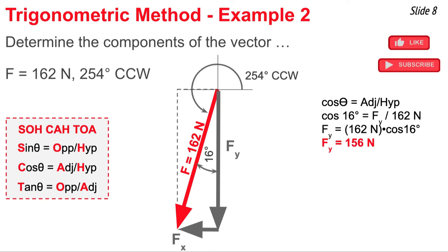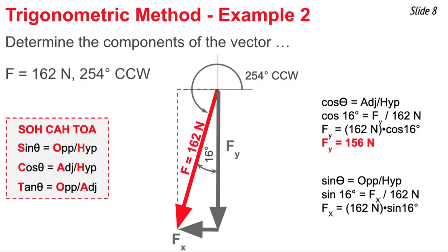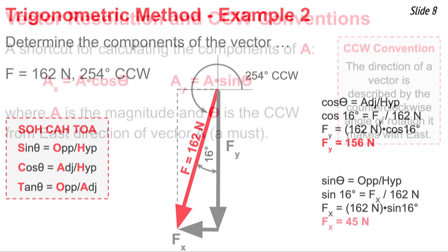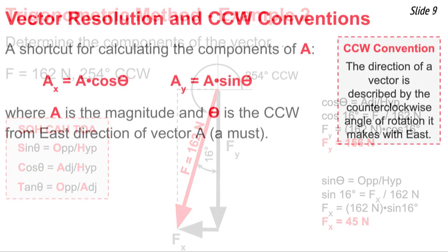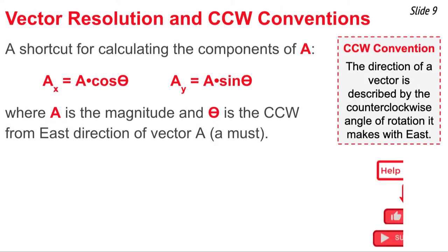The sine of theta will be used to relate the side opposite the 16-degree angle to the hypotenuse. The side opposite is fx and the hypotenuse is 162 newtons again. I'll do my algebra and then use my calculator to solve for fx. It comes out to be 45 newtons. Here at the Physics Classroom, we commonly use the counterclockwise from east convention for describing the direction of a vector.